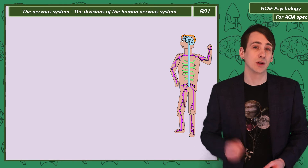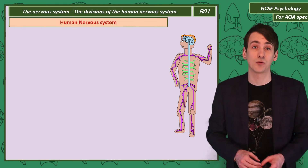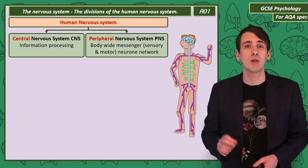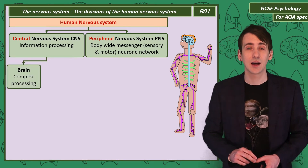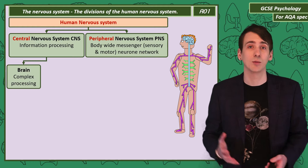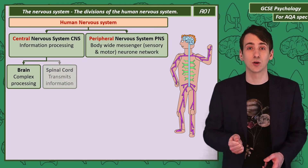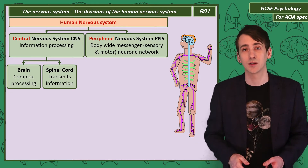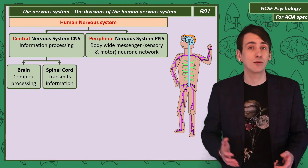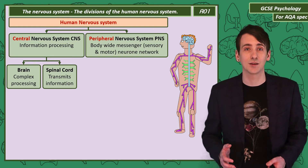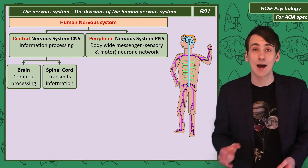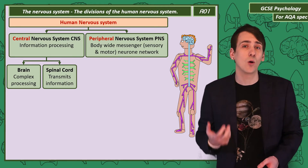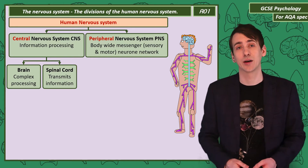Let's start by dividing out the human nervous system — the web of nerves that run throughout your body. The central nervous system, or CNS, is where information is processed. It contains the brain, where complex processing takes place, and also the spinal cord, which transmits information between the brain and the rest of your nervous system. The rest of your nervous system is the peripheral nervous system, or PNS. It's constructed of a network of messenger neurons — either sensory, for bringing information to the brain, or motor, from the brain back out to the body.